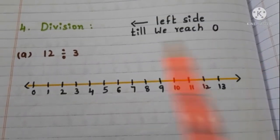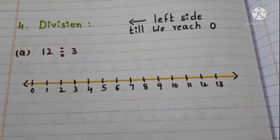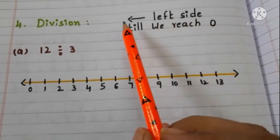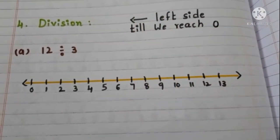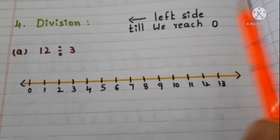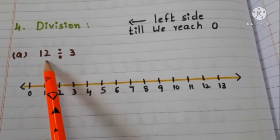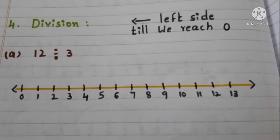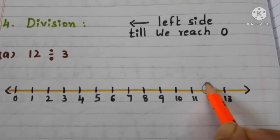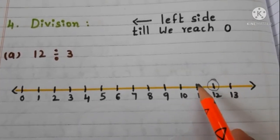Now let us see division by using a number line. Division means repeated subtraction, so we have to move to the left side on the number line — we move left until we reach 0. Let us see with the example: 12 divided by 3. First, start at 12 and jump 3 units to the left side: 1, 2, 3 — jump from here to here.